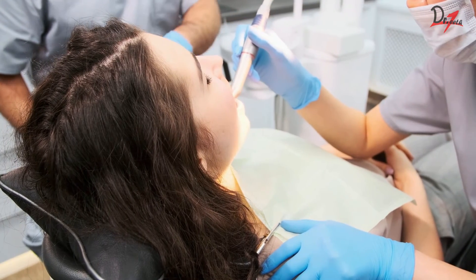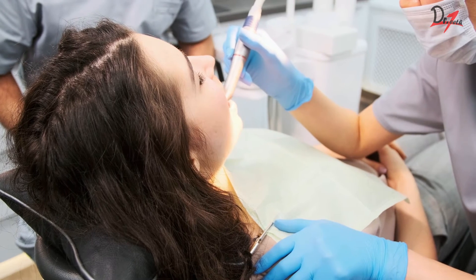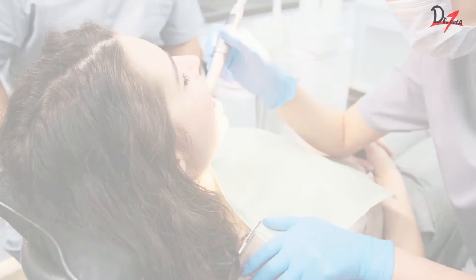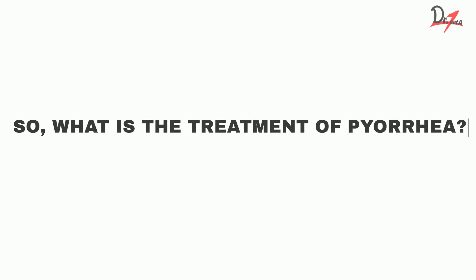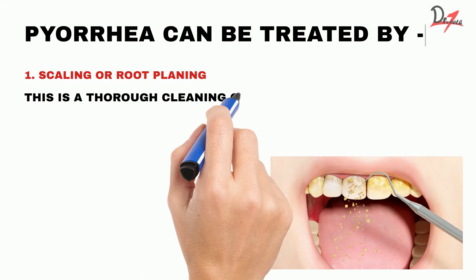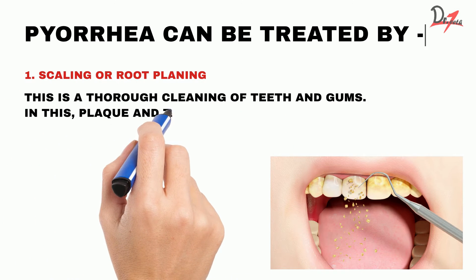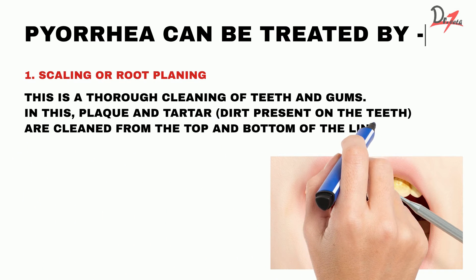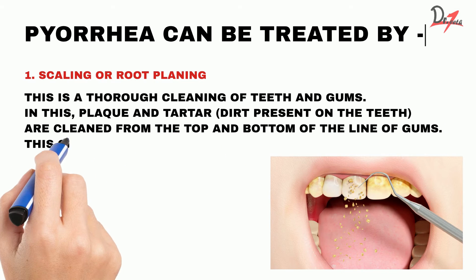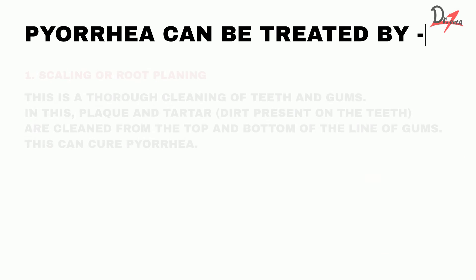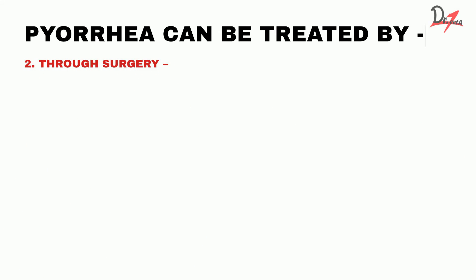Remember that prevention today will be the key to avoiding dental pyorrhea in the future. As for treatment, pyorrhea can be treated by scaling or root planing — a thorough cleaning of teeth and gums in which plaque and tartar are cleaned from the top and bottom of the gums. This can cure pyorrhea but is only helpful in the initial stages.